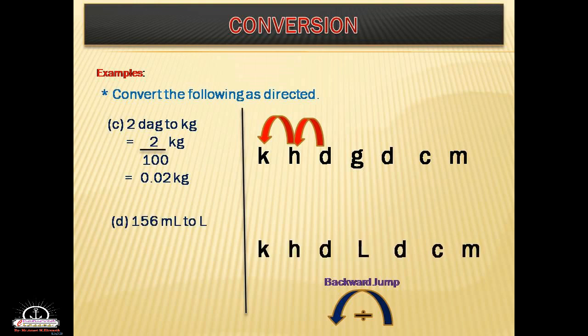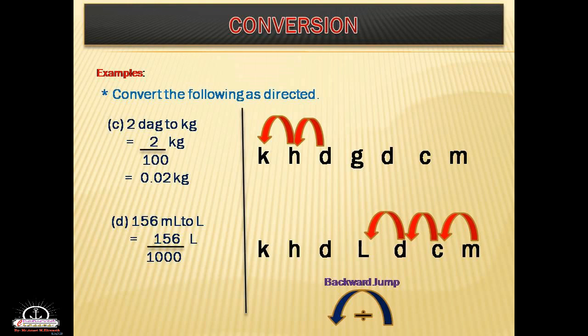Next example: 156 milliliters to liters. Again, it is lower unit to higher unit, so you jump three places backward and divide. Dividing by 1000, the answer is 0.156 liters.